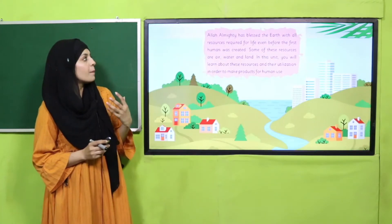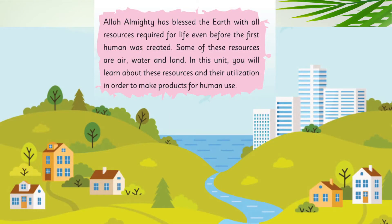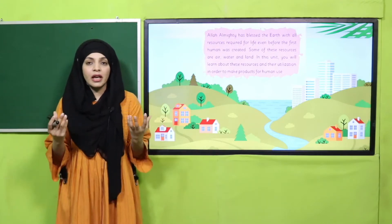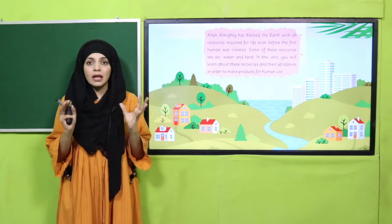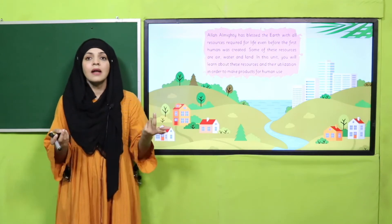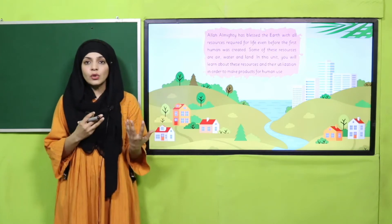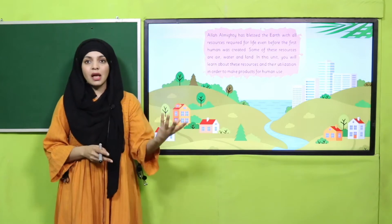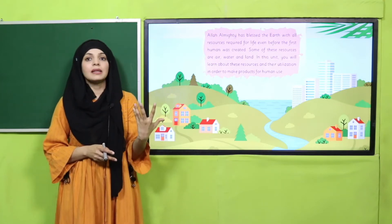As you know that Allah Almighty has blessed the earth with all the resources required for life, even before the first human was created. Some of these resources are air, water, and land. In this unit you will learn about the resources and their utilization in order to make products for human use. Hamari jo dunya hai, is ke andar bohut sari cheeze hain jo Allah Taala nai banai hain — which are called natural resources — aur hum in cheezo ko utilize karke human beings ke fayde ke liye different cheezain banaatay hain.